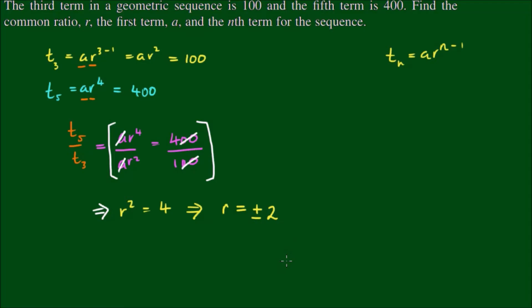Alright, so we've got two possible values for the common ratio and that means there are two possible values, a positive or a negative value for each of the odd number terms except for the first term a. Now we can substitute this result back into t3 to solve for a.